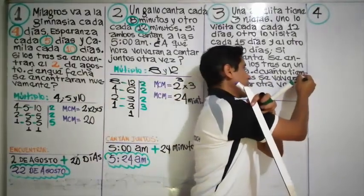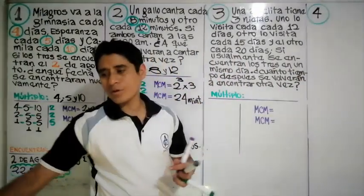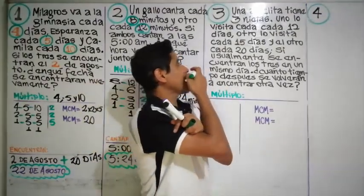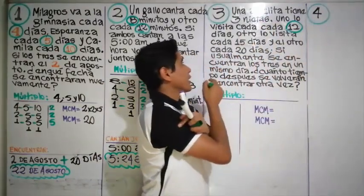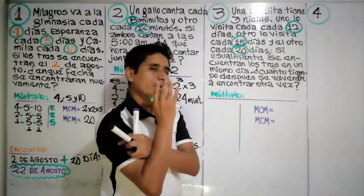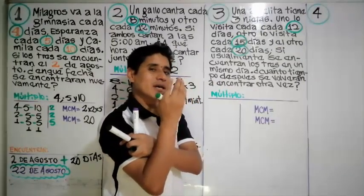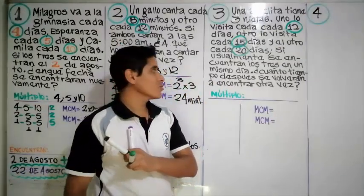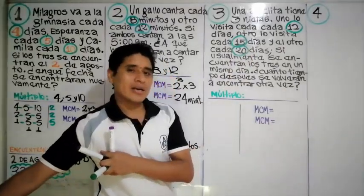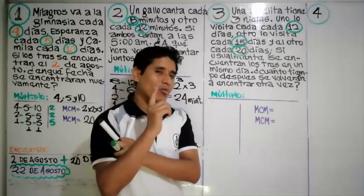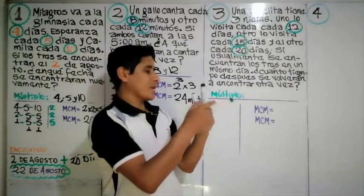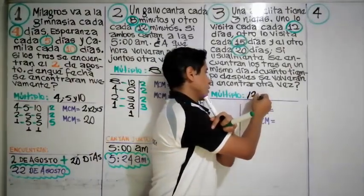Una abuelita tiene tres nietas. La primera la visita cada doce días, la segunda cada quince días y la tercera cada veinte días. Hay un día especial que la visitan los tres juntos. Ese día debe ser múltiplo de doce, quince y veinte.